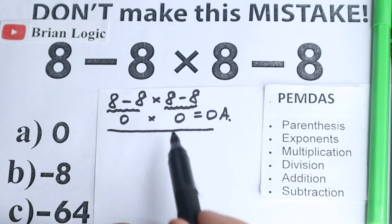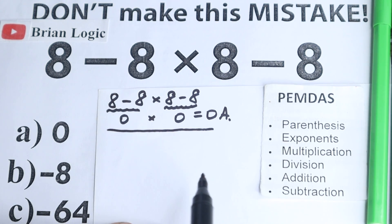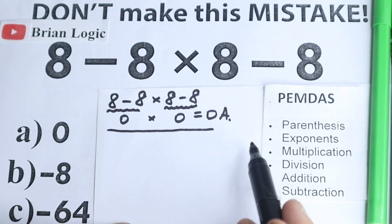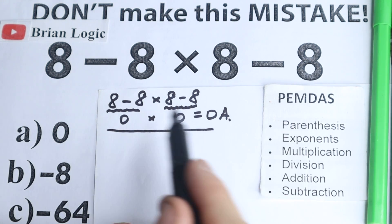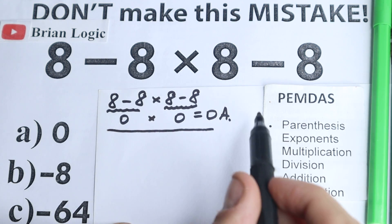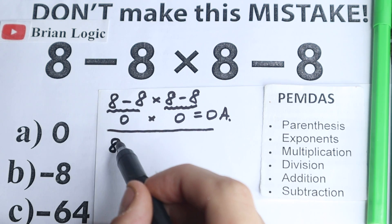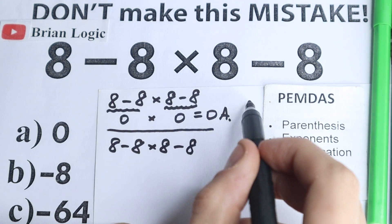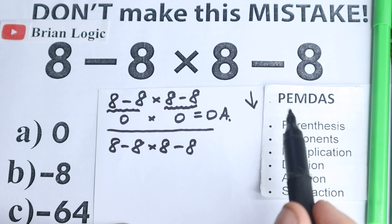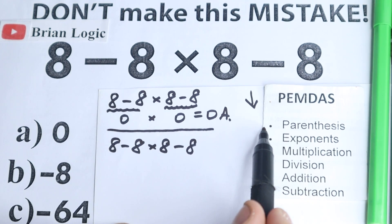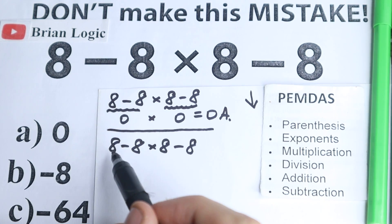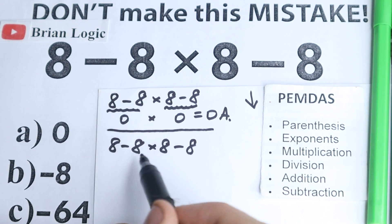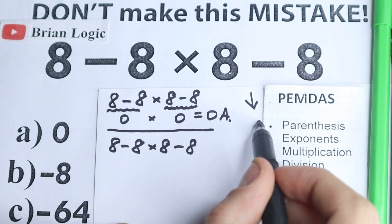Let's apply the correct order of operations and check whether 0 is really the correct answer. So we have: 8 minus 8 times 8 minus 8. PEMDAS goes from the top to the bottom — the first letter is P, so the first step is parentheses. Where do we have parentheses? Let's look — I don't see any parentheses, no brackets at all, so we just skip this part.